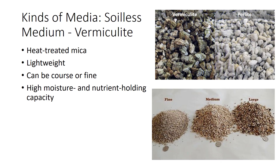Vermiculite is a lightweight, expanded, plate-like material obtained by heat-treating mica. It can be coarse or fine and has a high moisture and nutrient-holding capacity. Vermiculite is golden-colored in potting mixtures and should be handled with care when wet to avoid compressing the particles.